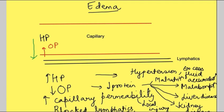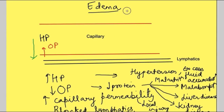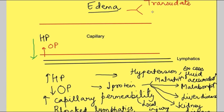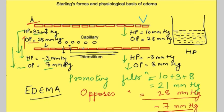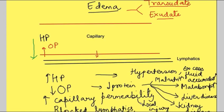There are two types of edema fluid: transudate and exudate. Transudate is water that accumulates in the interstitial space. In exudate, along with water, proteins also move from the capillary — because when there is increased capillary permeability due to local injury or infection, the spaces between endothelial cells increase enough for proteins to pass through. So exudate is water plus proteins, while in transudate the protein concentration in the collected fluid is not high.